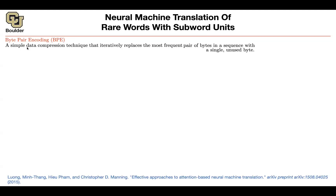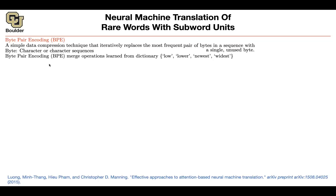What is byte-pair encoding? It's an old algorithm — a data compression technique. You iteratively replace the most frequent pairs of bytes in a sequence with a single unused byte. In the context of natural language processing or translation, a byte is going to be a character or a bunch of character sequences. So you are merging characters to form your words. Your words don't necessarily need to have any meaning — as long as they are useful, you can use them for translation.